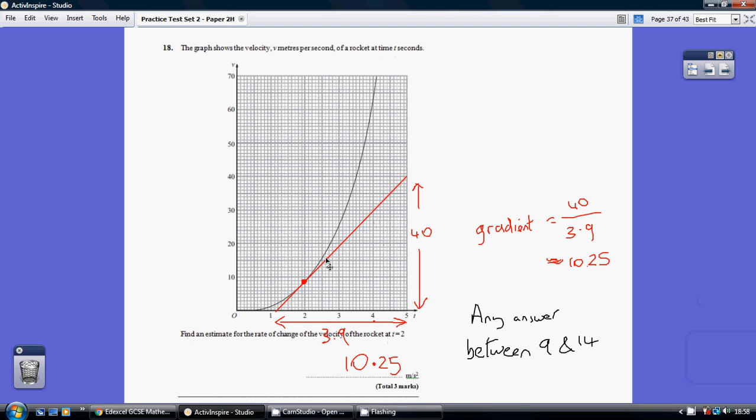Now doing it by eye is very hard to get this accurately done. So there's huge margin for error in the range of answers which the mark scheme allows. So the mark scheme actually allows any answer between 9 and 14. It's a massive range. So anyway, this is my line.